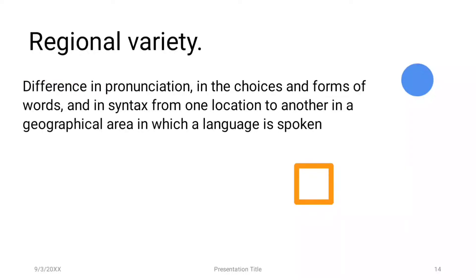Number ten: regional variety. Regional variety refers to differences in pronunciation, choice of word forms, and syntax from one location to another within the geographical area in which a language is spoken. This means that dialects can be formed based on regional variation.